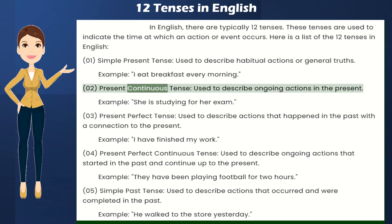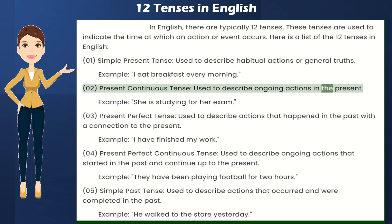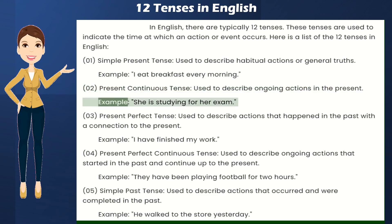Present Continuous Tense — used to describe ongoing actions in the present. Example: She is studying for her exam.